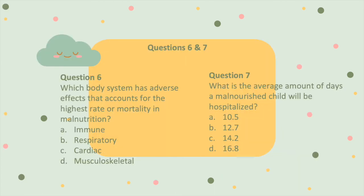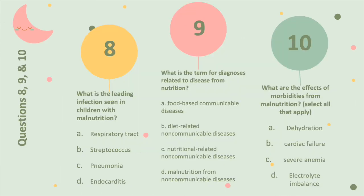Question 6: which body system? Immune — again, that high risk of infection. Question 7: the average hospital stay is 12.7 days. Question 8: respiratory tract infections. Question 9: it is known as diet-related non-communicable diseases. Question 10: A, B, and C — those morbidities are dehydration, cardiac failure, and severe anemia.